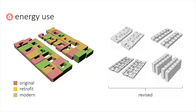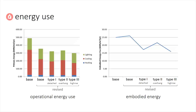We created five energy models. The first represents the neighborhood as built, with templates assigned according to our observations. The other four use the revised template to represent the neighborhood as it would be constructed if built today, with geometry as it is and with our three proposed interventions. On the left, we show the annual operational energy use for the neighborhood with each proposed intervention. The revised template provides better performance than the neighborhood as built, and the best performance is achieved with the high-rise typology, Type 3. On the right, we show the embodied energy per year based on an expected 50-year life cycle. The lowest embodied energy is achieved with the detached, Type 1, and high-rise, Type 3 typologies, because of their reduced surface areas.